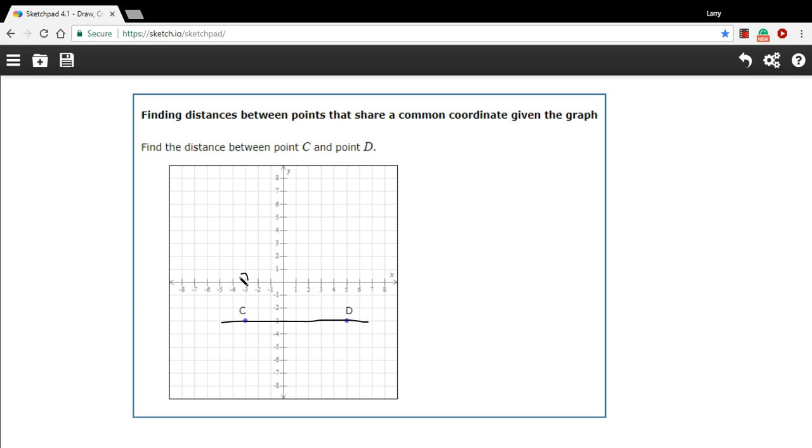Or you could read the X coordinate, which is what's different between these two. The Y coordinates are the same. Y coordinates are both negative three. The X coordinates are negative three and five. And you just take the absolute value of the subtraction of those.